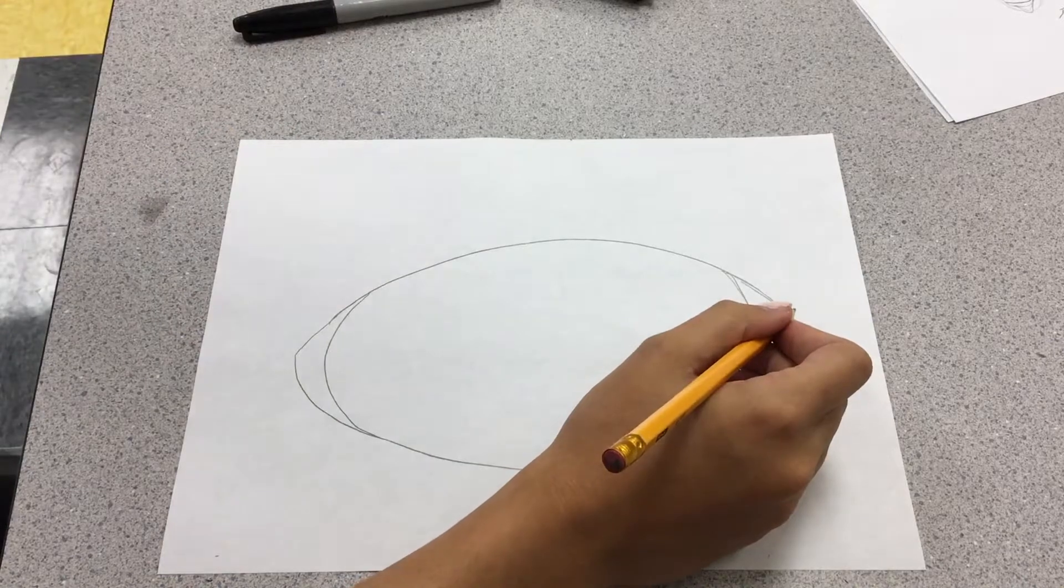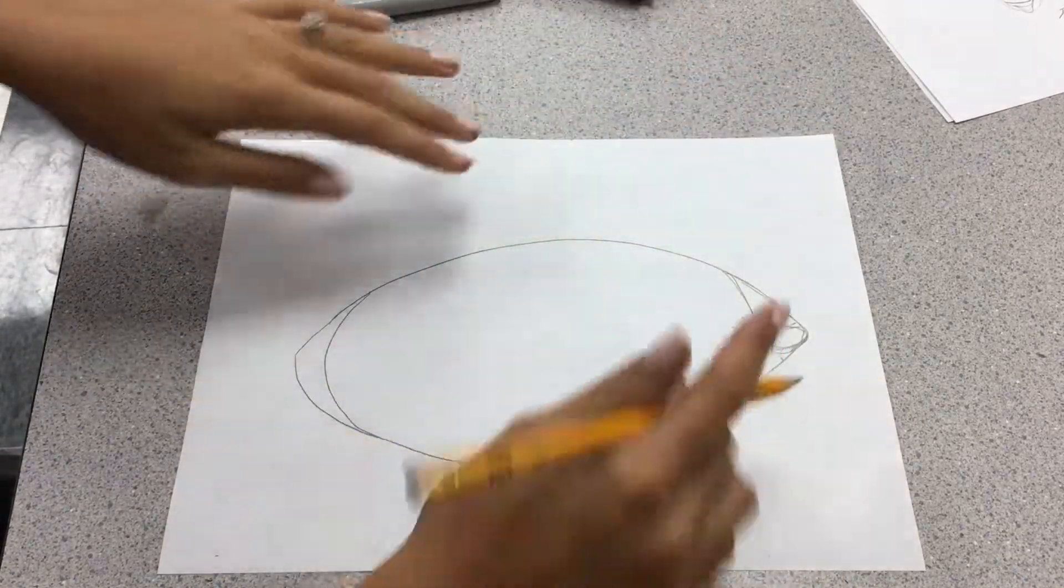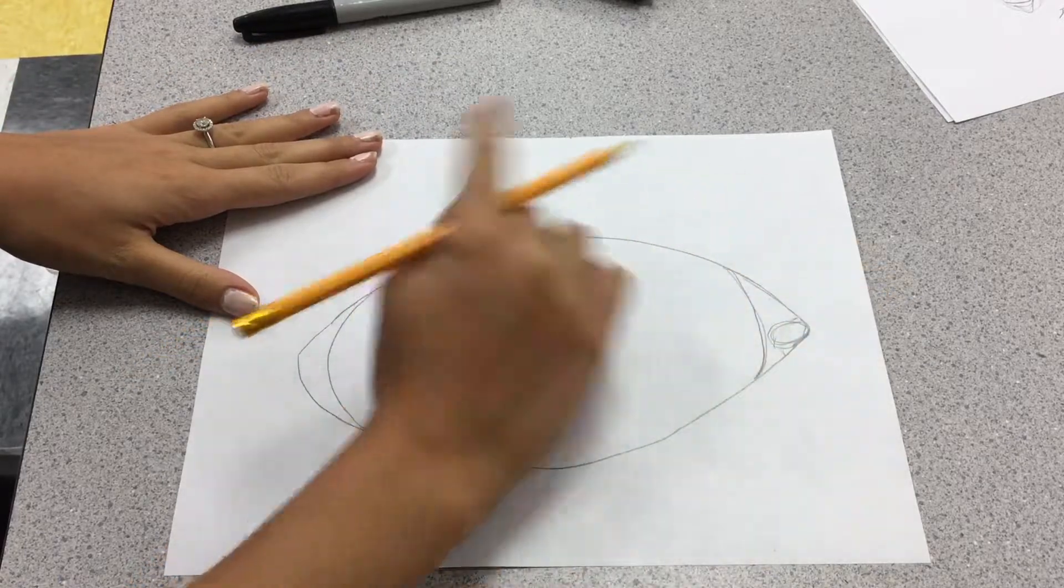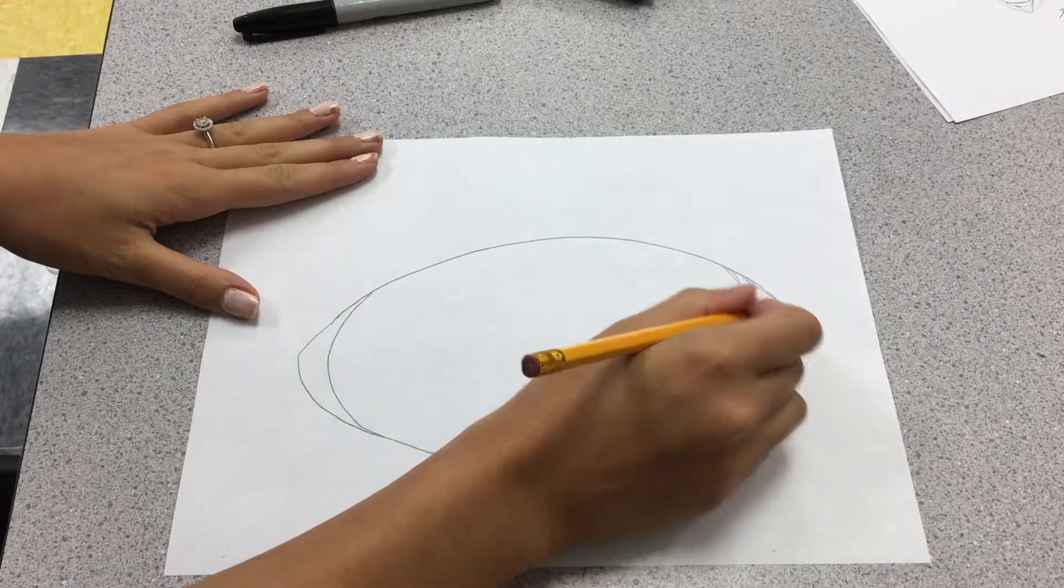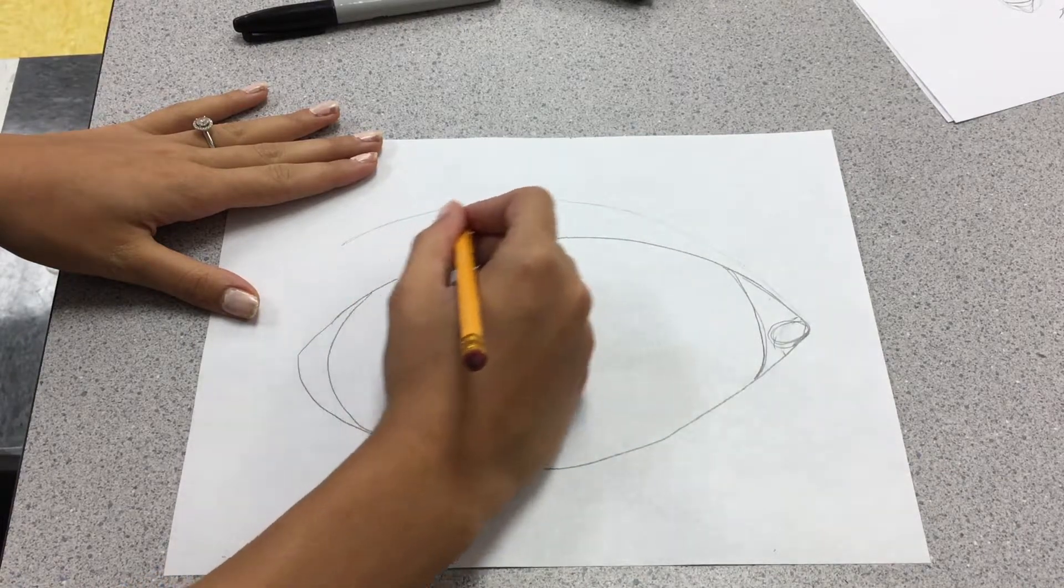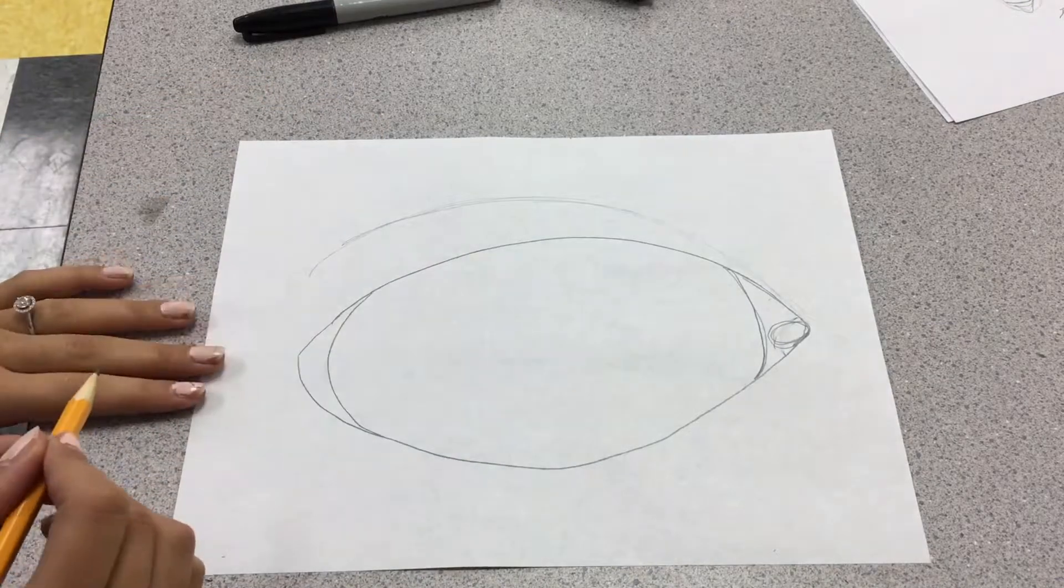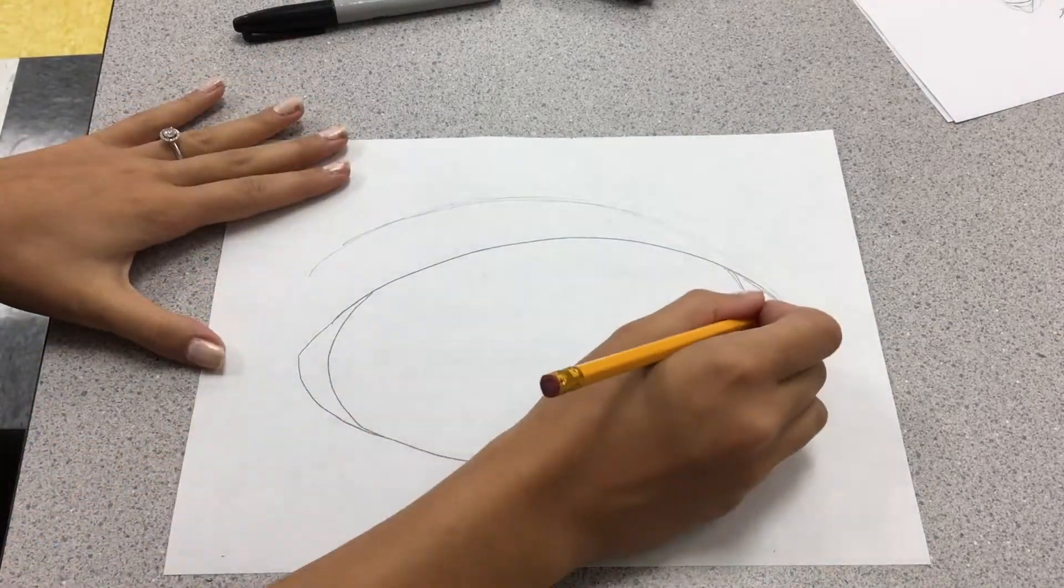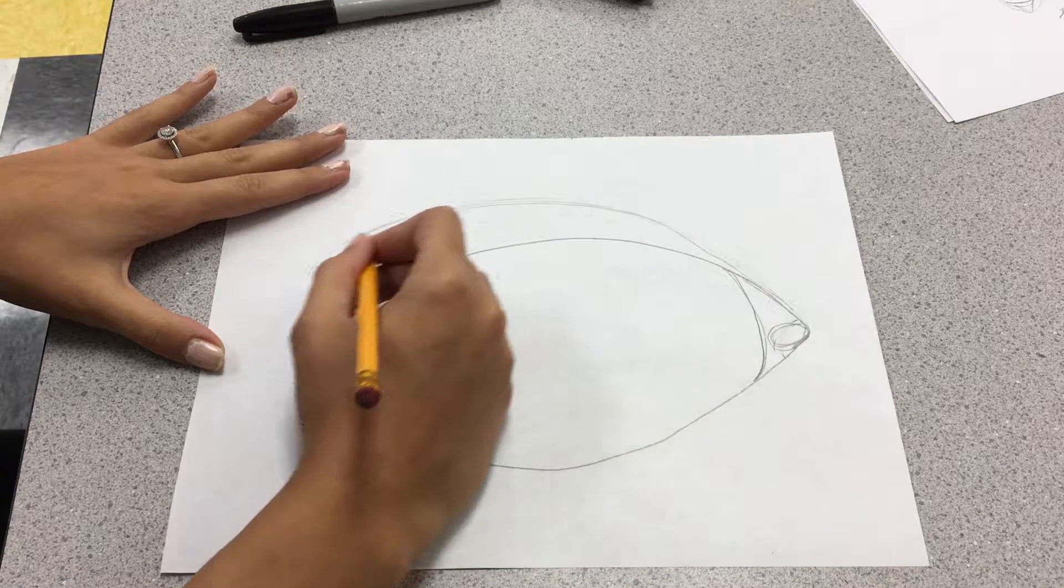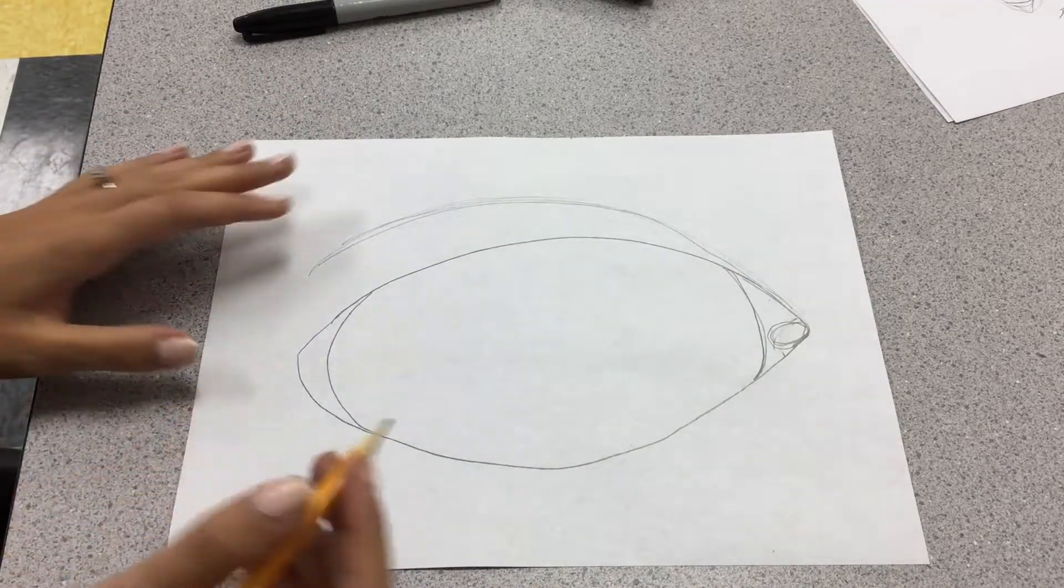Then we're going to do your upper eyelid. So again, if your eyeball is this big and your eyelids are covering part of it, your eyeball actually comes up here and there's a crease. So you're going to go from this corner and draw a line that goes up and curves like that. And you don't want this line to be as dark as the other lines you're making. Maybe a little lighter.